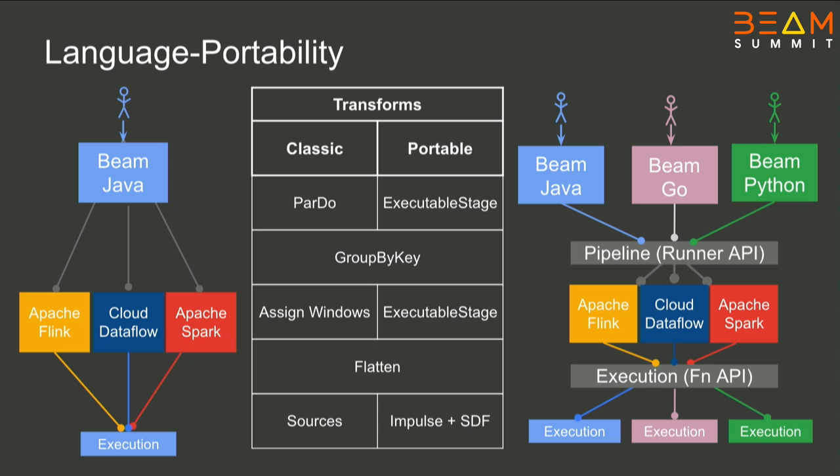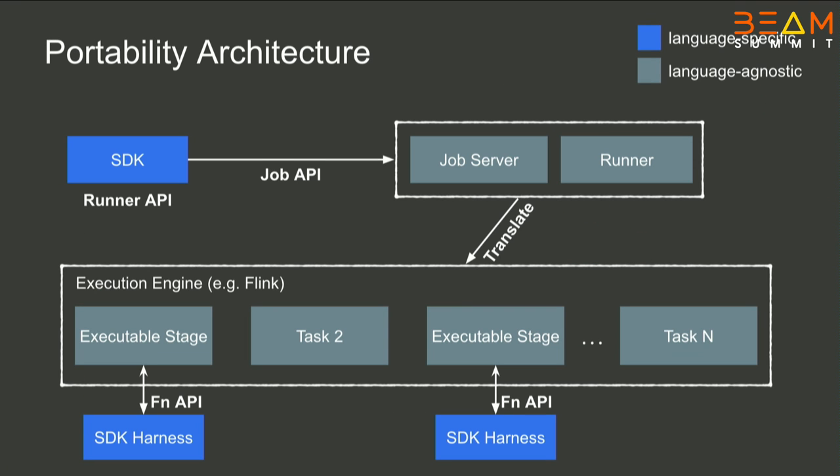To get a rough overview: now we have the SDK — Python or Java — which generates the Runner API. Then we have the job server, which is also a Beam component that takes care of managing the life cycle of the job and providing a unified way for configuration. The job server calls the runner and gets the translation. We didn't even really have to change all the existing runners — we just had to provide a way to translate executable stages, which use the FN API to communicate with the so-called SDK harness, which runs the language-dependent parts of the pipeline.